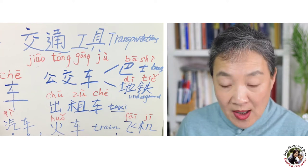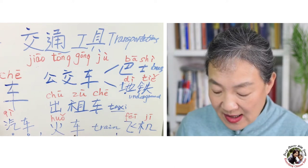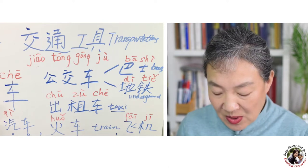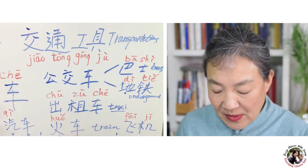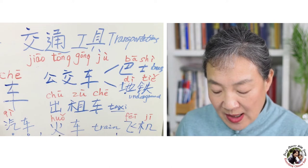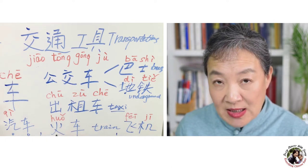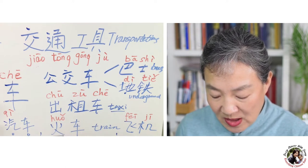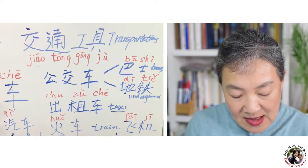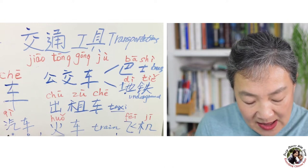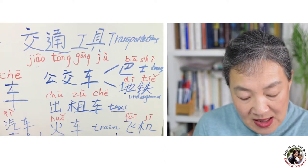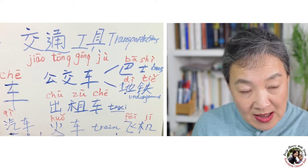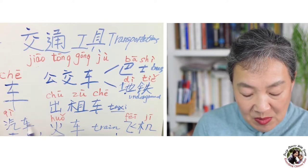火车 — 火 means fire, so 火车 means train, because at the beginning the train engine was a steam engine that burned coal, so people referred to the train as 火车. And 汽车 — 汽 means steam; the original car was also steam-powered, so 汽车 means car.